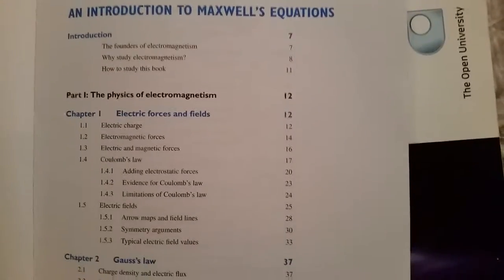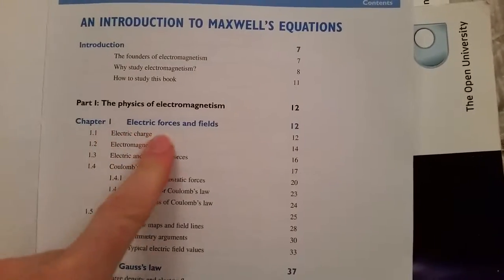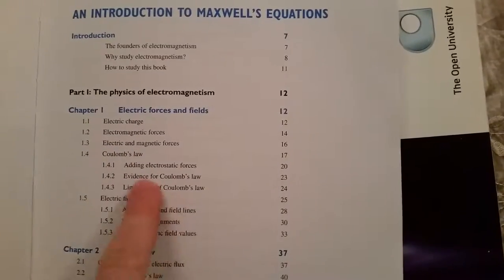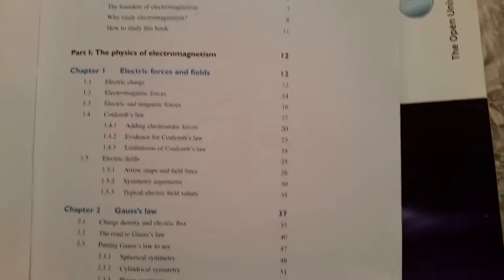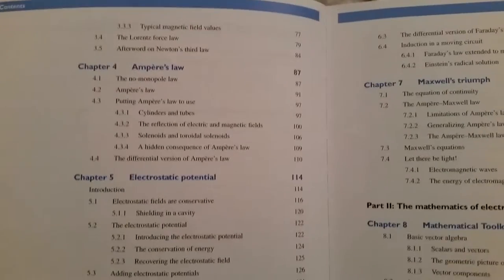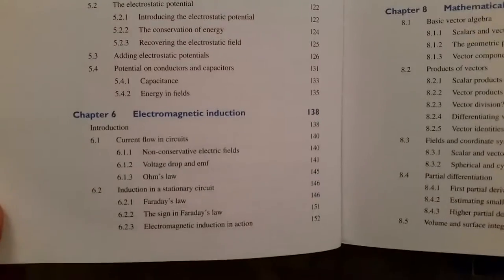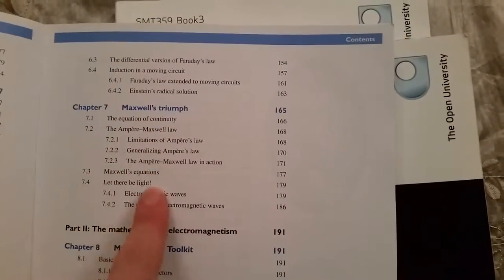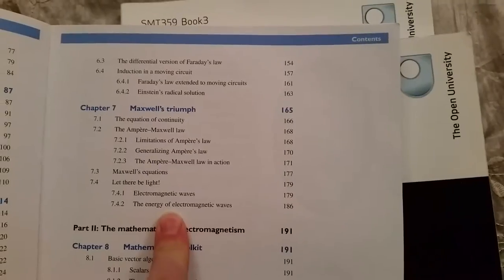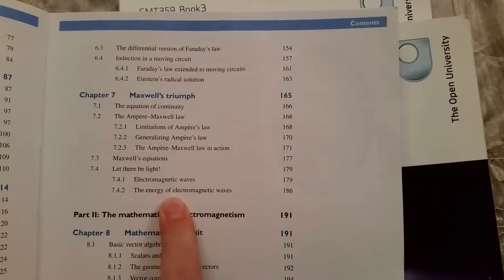If we look at the index, this is book one: electric forces and fields, which is going over Coulomb's law, and then we look at Gauss's law and magnetic forces and fields. Ampere's law, electrostatic potential, electromagnetic induction, and Maxwell's triumph is a little bit on how Maxwell's equations lead to the wave equation for light.